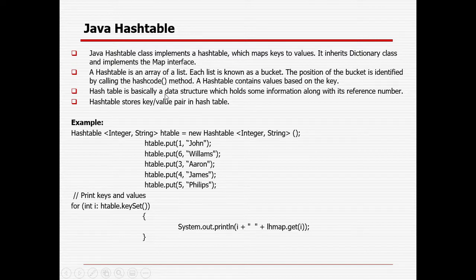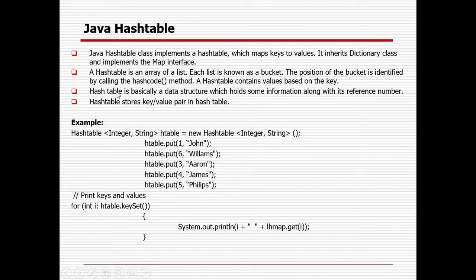A HashTable is basically a data structure which holds some information along with a reference number. For each reference, there will be some hash code. The HashTable stores key-value pairs — each pair will be stored in the hash table, where keys and values are associated.